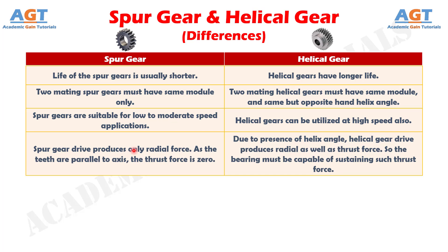Difference number 10: Spur gear drive produces only radial force. As the teeth are parallel to the axis, the thrust force is zero, whereas due to the presence of the helix angle, helical gear drive produces both radial and thrust force. So the bearing must be capable of sustaining such thrust force.